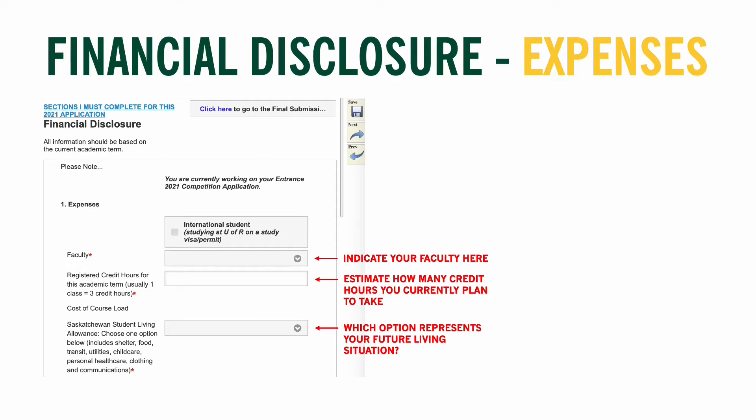The financial disclosure is separated into two sections: Expenses and Resources. Under the Expenses section, we use the same basic parameters as Saskatchewan student loans to estimate how much school is going to cost you. Under the Resources section, you disclose what resources you have access to in order to pay for your first semester of school.